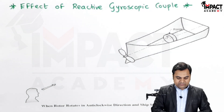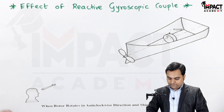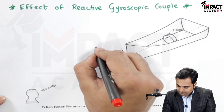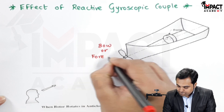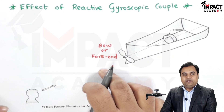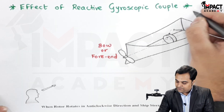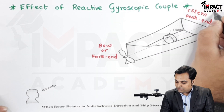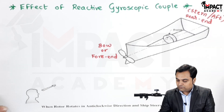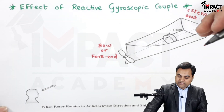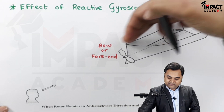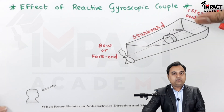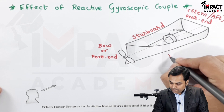First, I'll give the notations to the parts of the ship. The front end, when looking as an observer from the front, is called the bow or fore end. The rear end is called the stern or aft. When looking from the rear, the right-hand side is called the starboard, and the left-hand side is called the port.